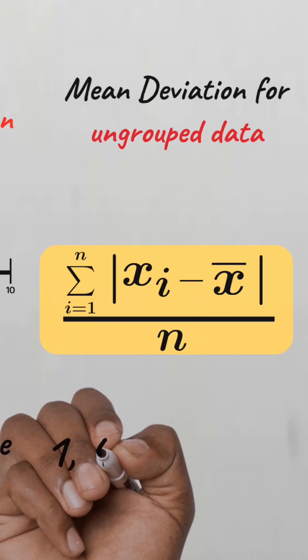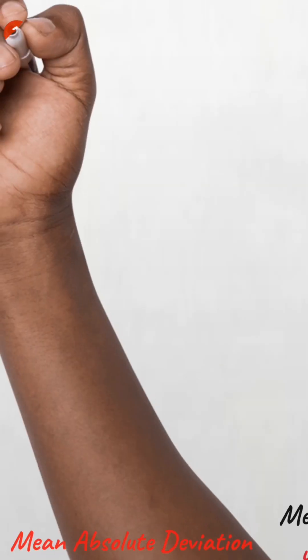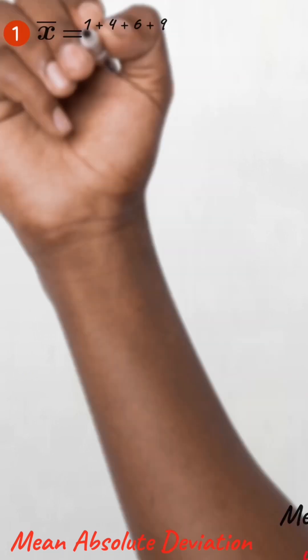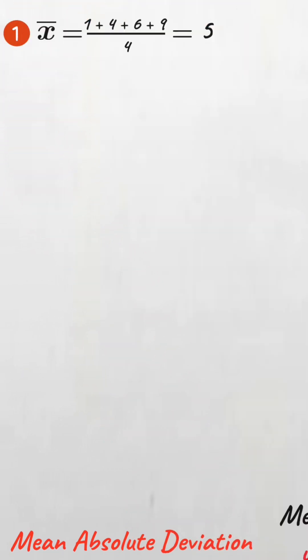Let's use this formula to find the mean deviation of this data set. So we first find the mean, which is 1 plus 4 plus 6 plus 9, all divided by 4. That's a mean of 5.